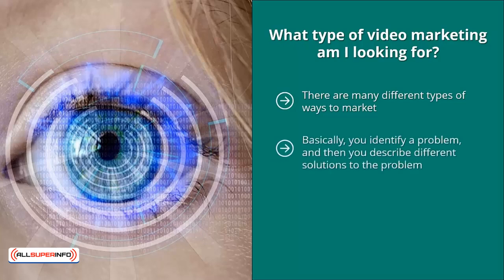Videos involving consumer guides work differently: you identify a problem and describe different solutions. This video has to be followed up by another video that talks about a narrower range of solutions, and ultimately it must talk about the solution you are promoting — otherwise you're not going to make any money. Other videos focus on lifestyle, where a spokesperson talks about the common concerns of people who use a particular type of product — for example, makeup — discussing the importance of the right blush or eye shadow, then the different product categories available.